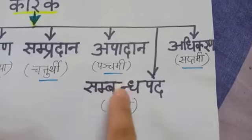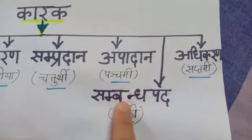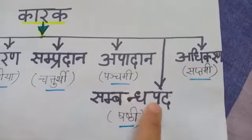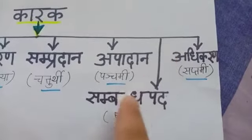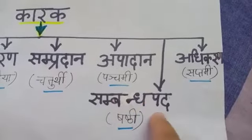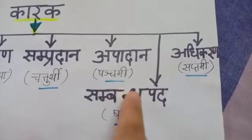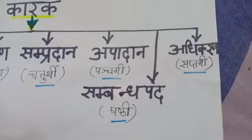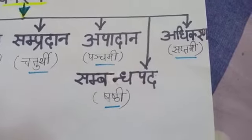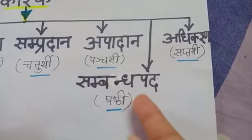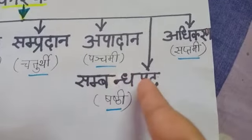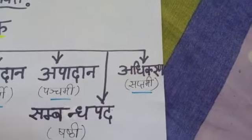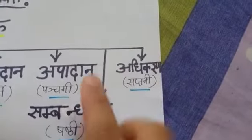Sambandha is not actually a karak, but we are learning it in the karak chapter, that's why I am writing it here. Sambandha pada means 'related' — like Ram's pen, my book, a mother's son, a flower's smell. Something related is shown by sambandha. Sambandha pada always takes shashthi vibhakti.